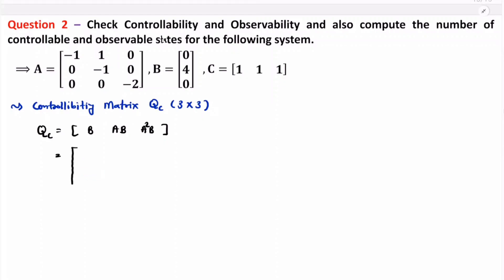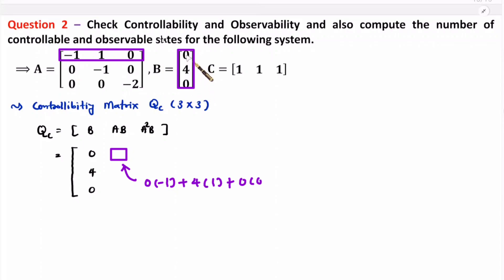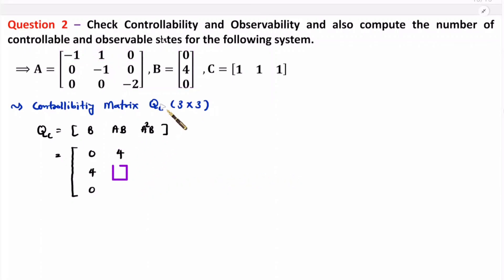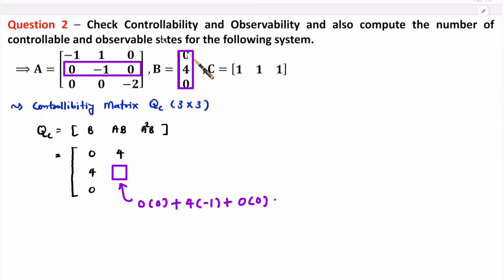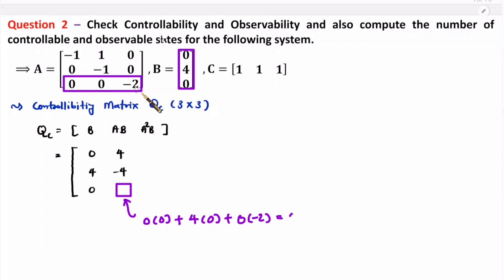Matrix B is given to us, so we take it as is: [0, 4, 0]. Now we need to identify AB, which is the multiplication of A and B. The first element is 0×(−1) + 4×1 + 0×0 = 4. The second element is 0×0 + 4×(−1) + 0×0 = −4. The third element is 0×0 + 4×0 + 0×(−2) = 0. So AB = [4, −4, 0].